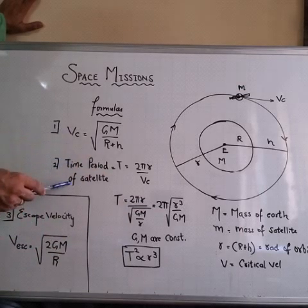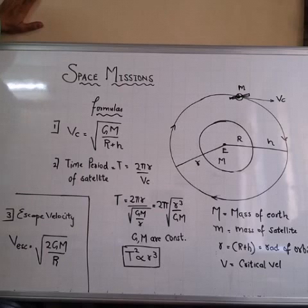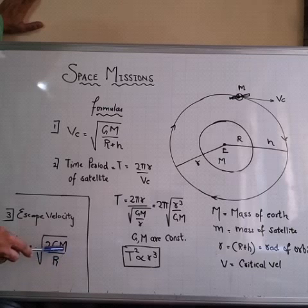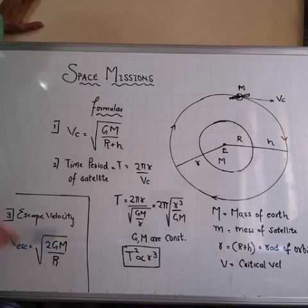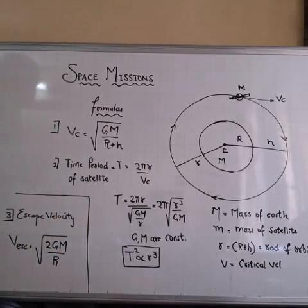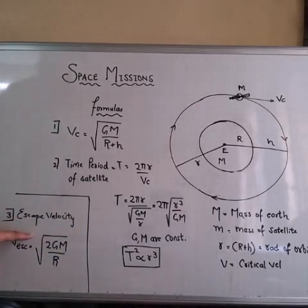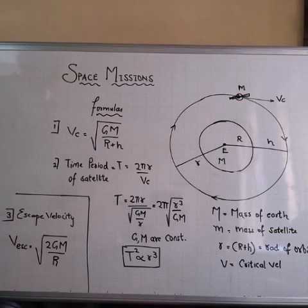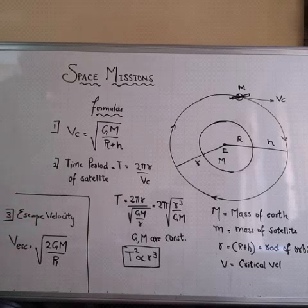The third formula is for escape velocity, given by square root of 2GM upon R, where R is the radius of earth, M is mass of earth, and G is the universal gravitational constant. On Earth, you should remember that escape velocity is 11.2 km per second. Keep that in mind.